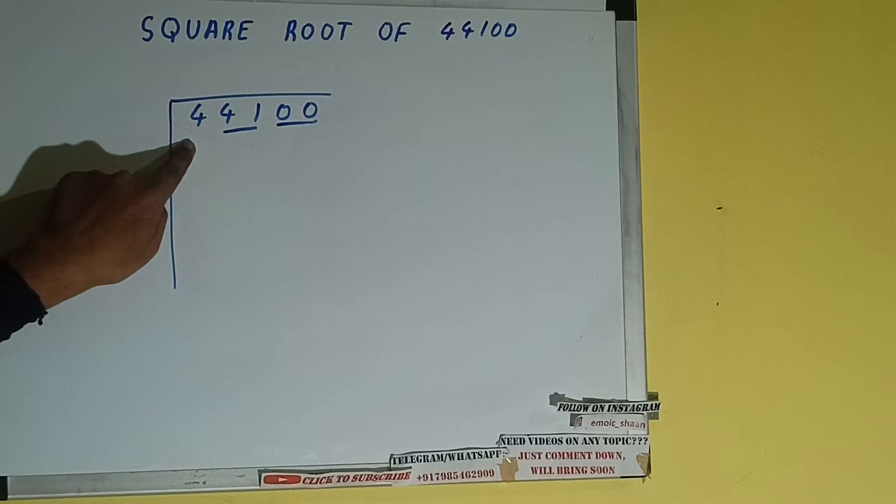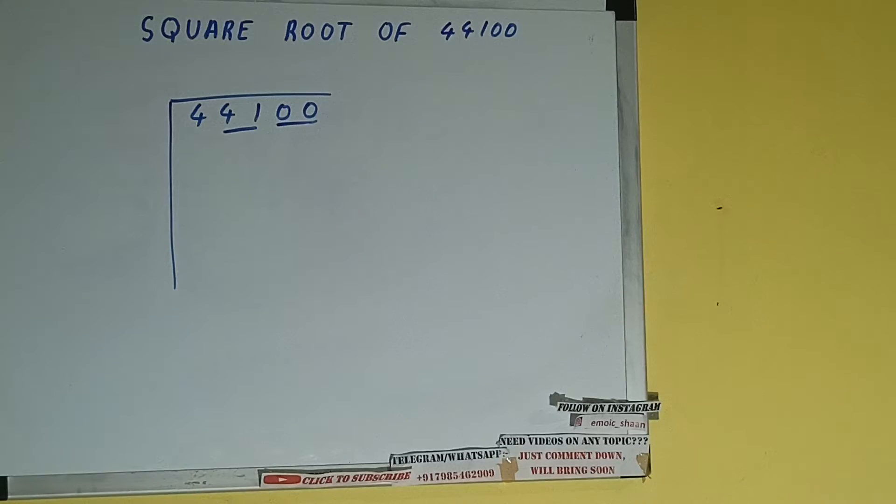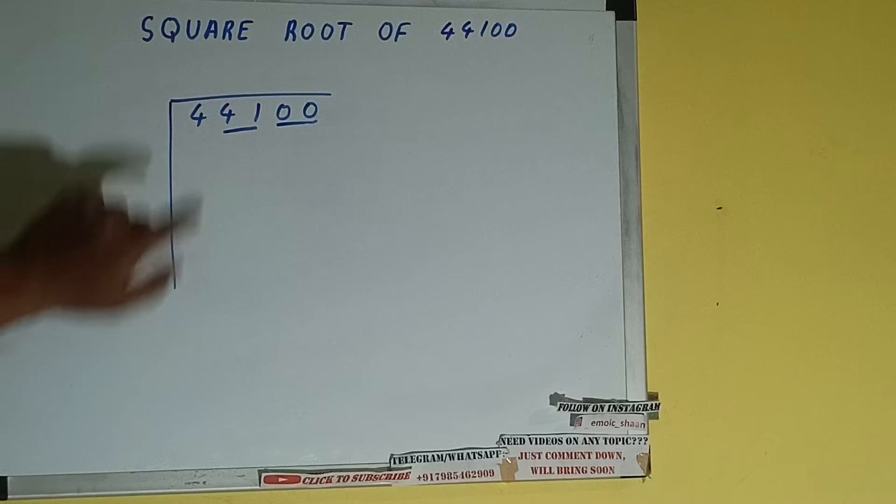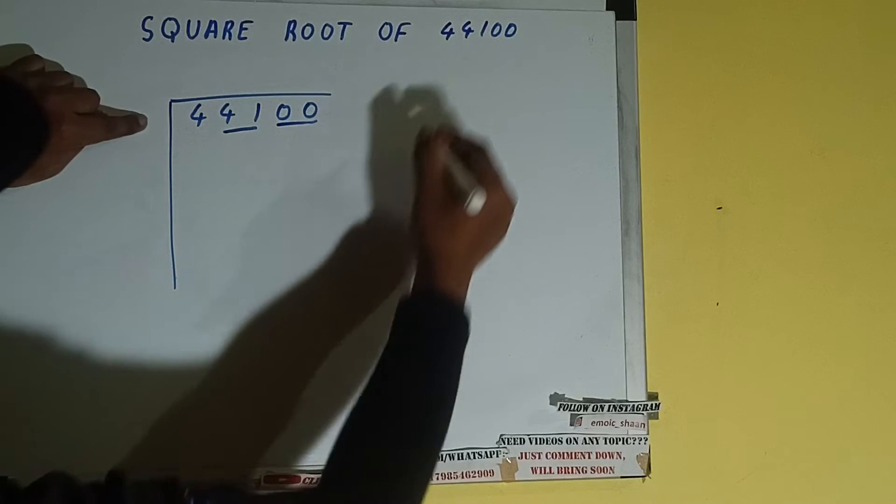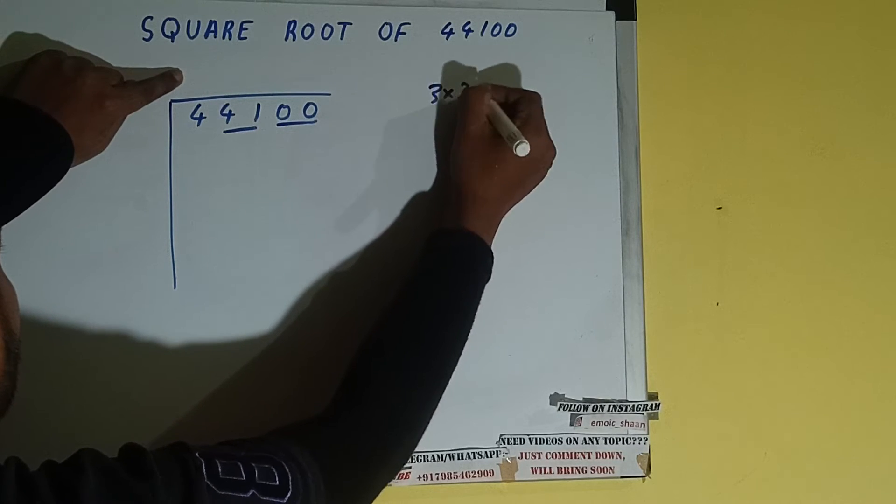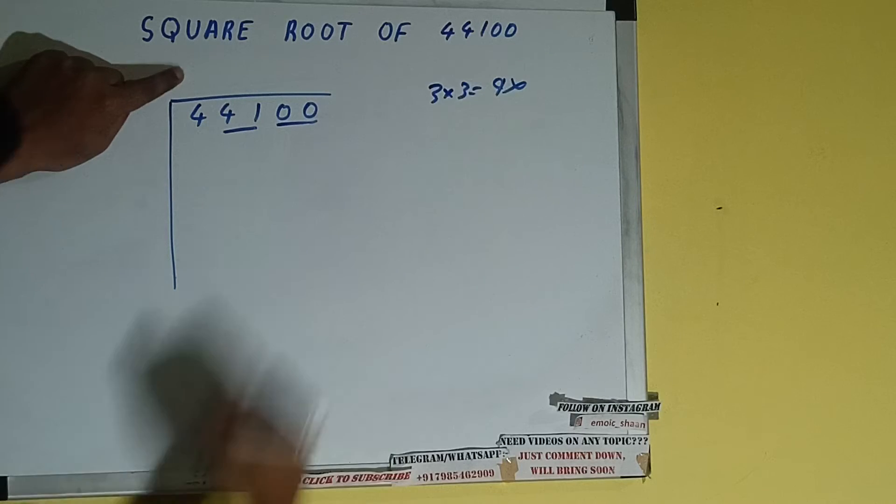So first we'll write this four and then we'll bring down the pairs. The rule is whatever number we write here we need to write here also. So if we write 3 here and 3 here it will be 9, which is greater than 4.